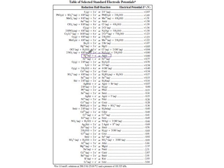And if we read up the right side — lithium, potassium, barium, calcium, sodium, magnesium — aluminum metal will be our SRA, our strongest reducer.